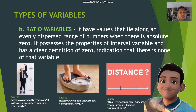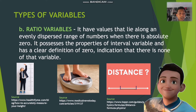For ratio variables, values lie along an evenly dispersed range of numbers where there is an absolute zero. Ratio variables possess the properties of interval variables and have a clearly defined zero, indicating there is none of that variable. Examples include height, weight, and distance. The difference between measurements exists and a true zero value exists.